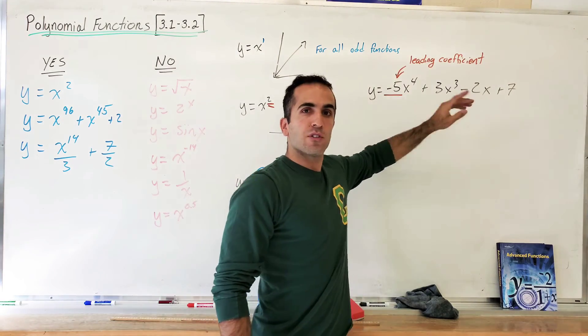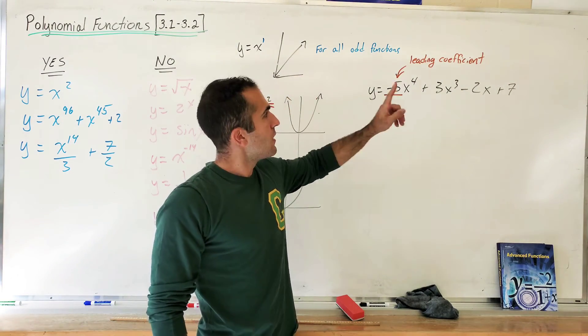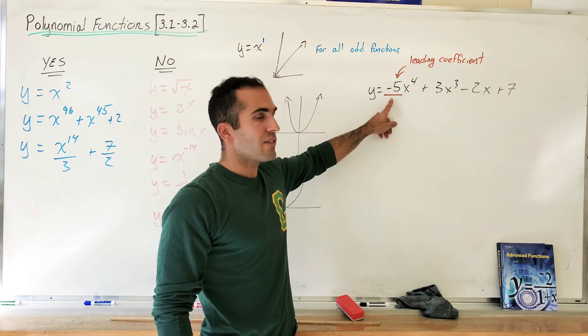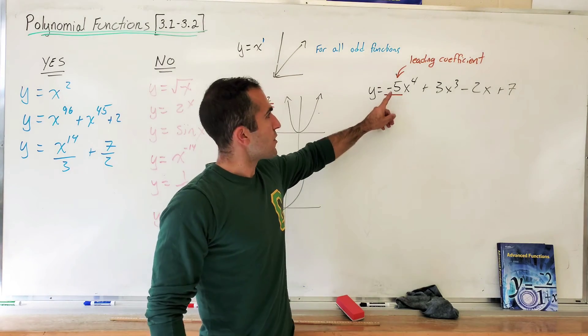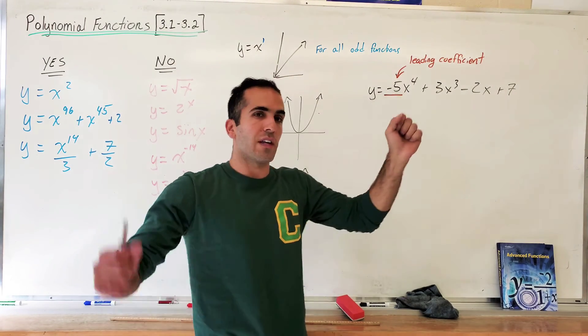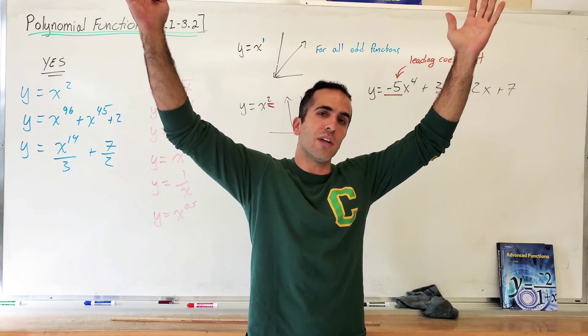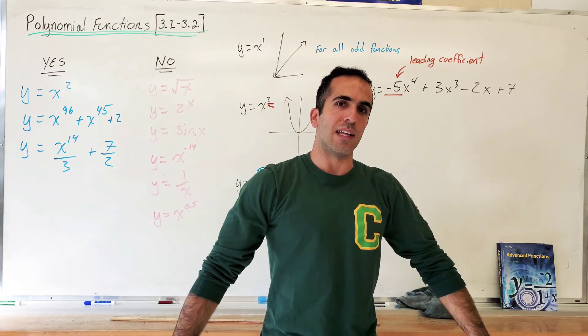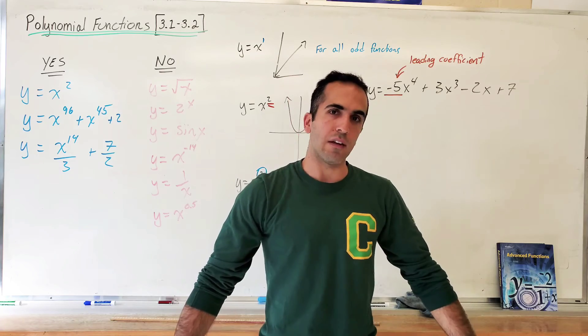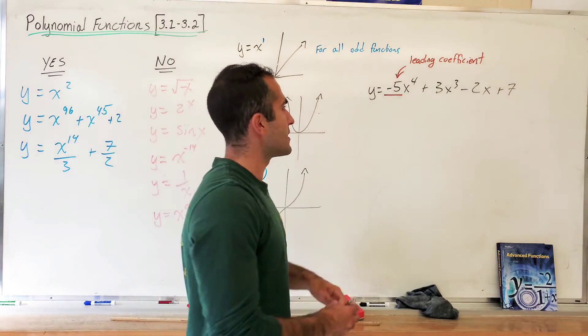Okay? So the highest power here is x to the 4. So this is an x to the 4 function. My leading coefficient is negative 5. That's all I need to know. So think of this like a parabola. You know that if a parabola opens up x squared, negative x squared, bang, opens down. Negative infinity, negative infinity. This is going to behave in the exact same way.